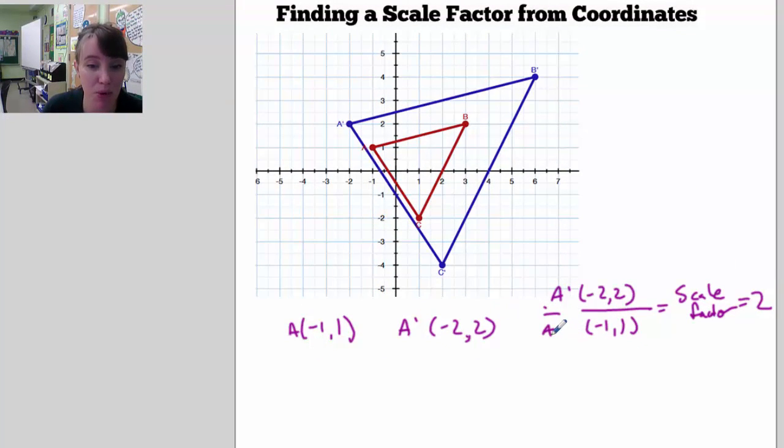Because from the pre-image to the image, it was increased, so it was enlarged by a scale factor of 2. And what you'll notice is that any time, any other coordinate is going to have the same relationship. So B, for instance, is 3, 2. That means B prime is 6, 4.